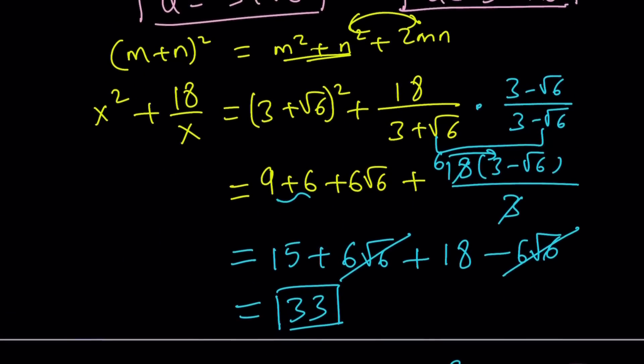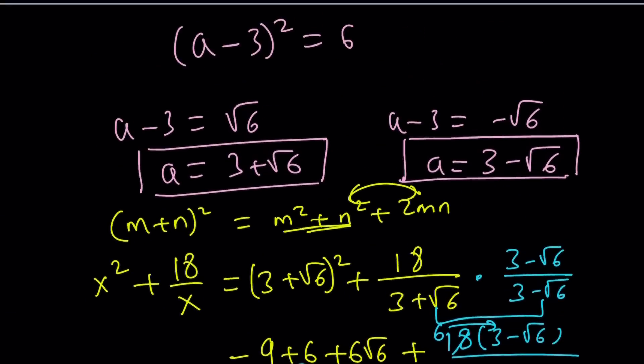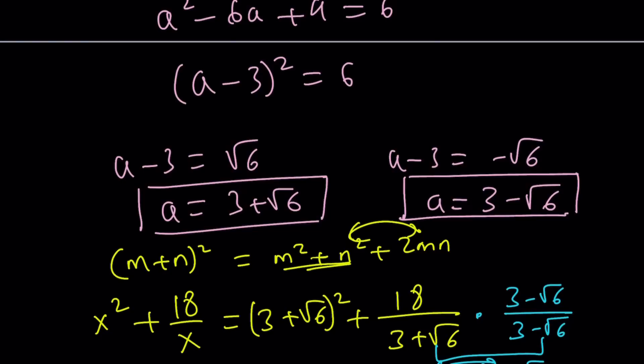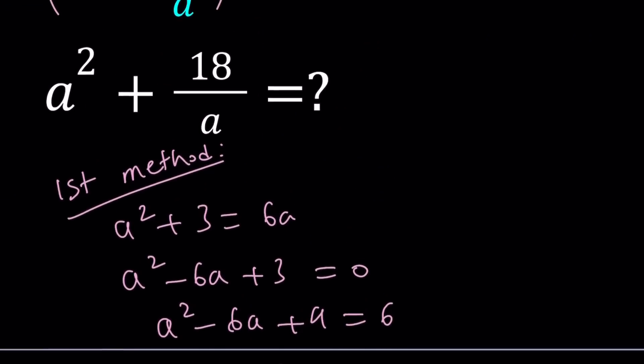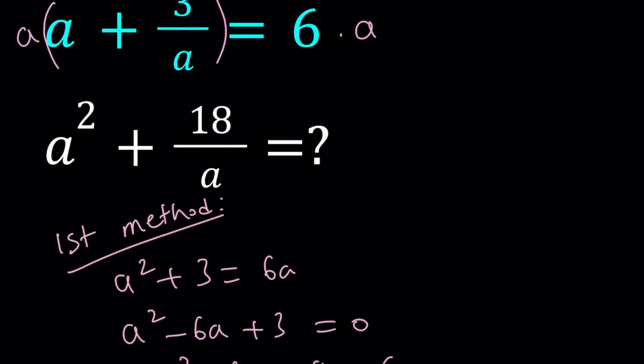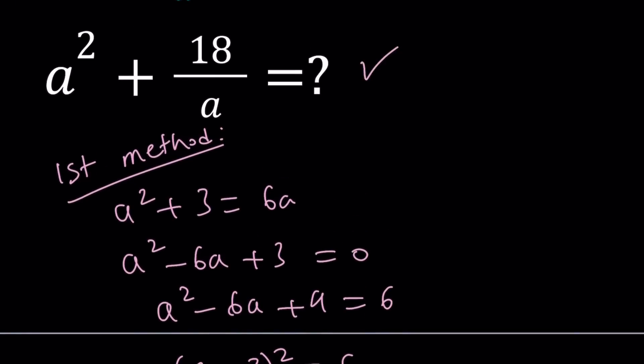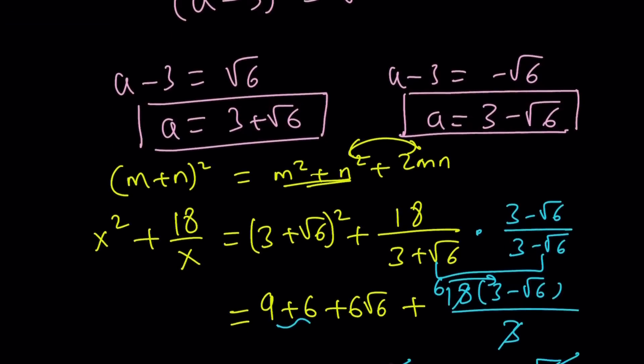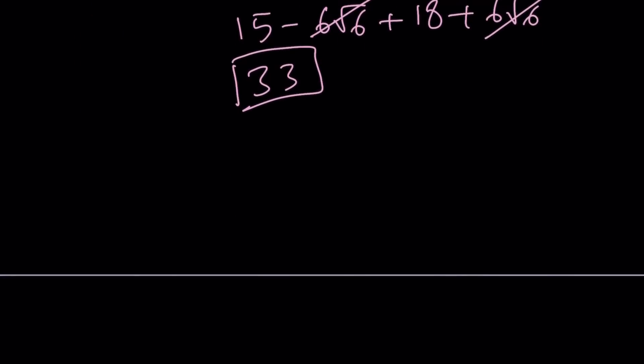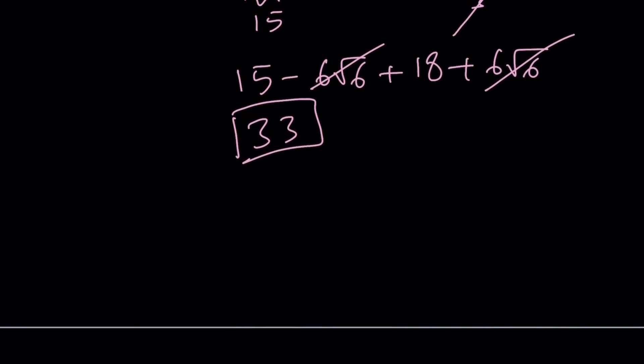And that's kind of interesting. Like we have a variable expression, but it seems to be a constant for this particular a value. So that's kind of interesting. Now, I'm going to go ahead and present the second method. So our first method was basically to solve the first equation. It turns into a quadratic. We find the radical values. We plug it into this one. We take advantage of conjugates, simplify, and we get a numerical answer. And in both cases, we got the same. So most probably, we did it right.